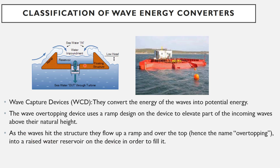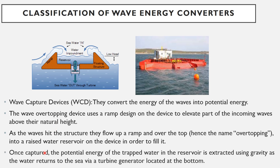Once the reservoir is filled with water, a turbine at the bottom allows the water to flow back to the sea by gravity, generating electricity — similar in principle to a hydropower plant. The water enters the reservoir, then flows down through the turbine back to the sea, generating electricity. The potential energy of the trapped water is extracted as the water returns to the sea via a turbine generator at the bottom.